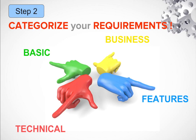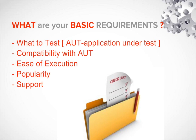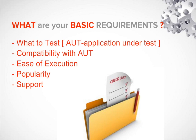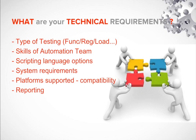Step number two: once you have listed and documented all the requirements, categorize them into four categories — Basic, Technical, Features, and Business. For example, your basic requirements will include things like: what exactly is the application under test, compatibility of the tool with the application under test, ease of execution, popularity, and support of the tool. Your technical requirements can include the type of testing — whether functional, performance, or other — and the skills of your team so you can select the tool accordingly.